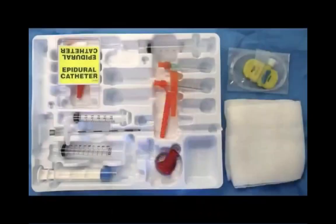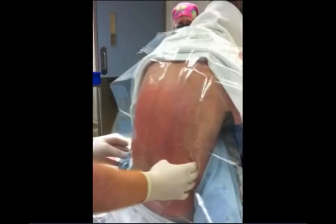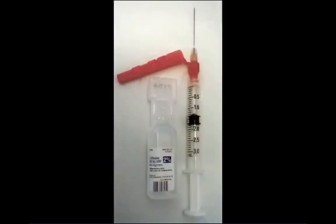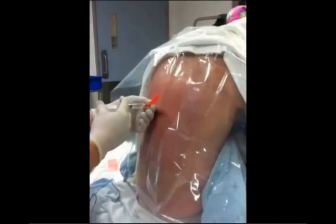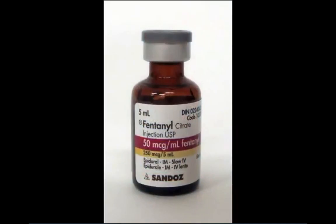A strict aseptic technique with a hat, mask, and sterile gloves is used when performing neuraxial anesthesia. After positioning the patient, the skin is cleansed with an alcohol-based chlorhexidine solution and sterile drapes are applied. Local anesthesia using 1-2% plain lidocaine through a fine gauge needle is used to minimize patient discomfort with the procedure. Small amounts of intravenous sedative and analgesic medications such as midazolam and fentanyl may also be administered to minimize patient discomfort and anxiety.